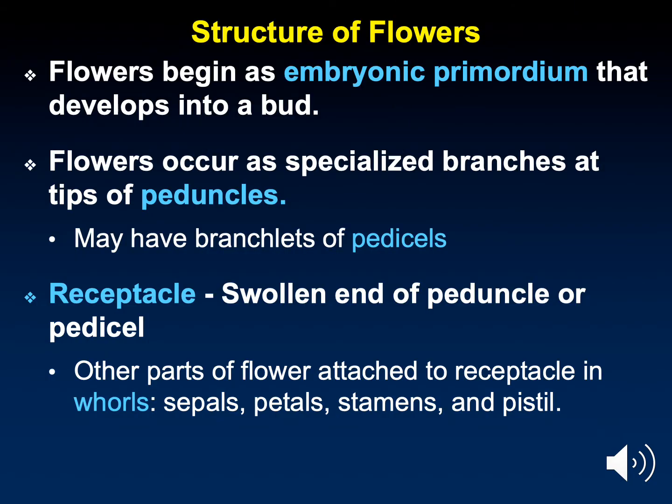Flower development begins with an embryonic primordium that occurs in a bud. The flowers occur at the end of specialized branches called peduncles. At the end of the peduncle is the receptacle, and most of the flower parts are attached to the receptacle. All of the flower parts are modified leaves.